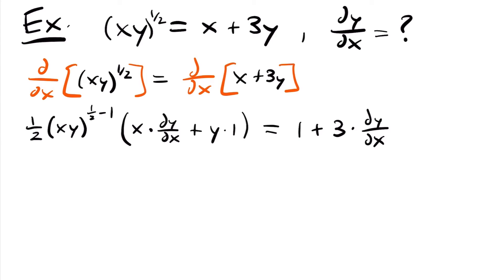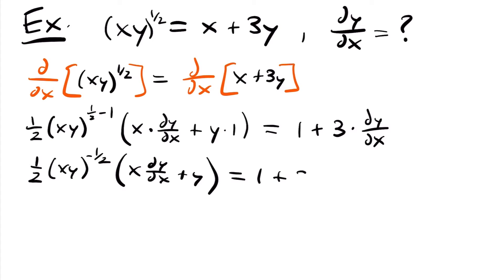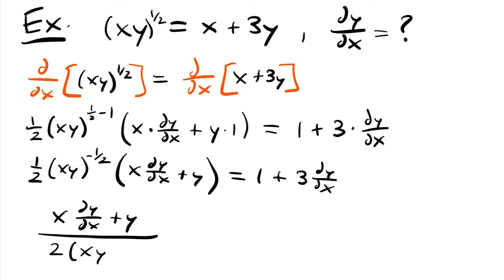Now we're ready to simplify. We have 1/2 times xy to the negative 1/2 power times x dy/dx plus y, and that equals 1 plus 3 dy/dx. The next thing I'm going to do is move the term with a negative exponent to the denominator. So we will have x dy/dx plus y divided by 2 times xy to the 1/2 power, which is still equal to 1 plus 3 dy/dx.